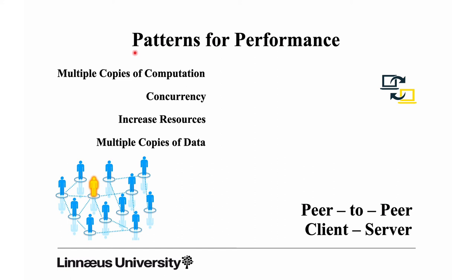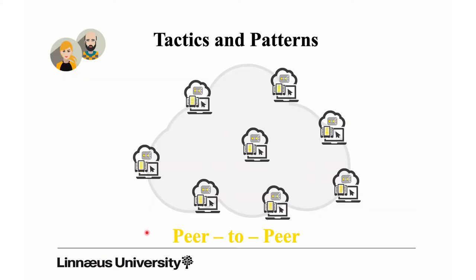Having multiple copies of data could create a problem of data consistency, which we won't explore further here. In principle, tactics need to be supported by some kind of structure for how to organize the architecture elements. Looking at patterns for performance, client-server is one alternative, but you could also imagine a peer-to-peer solution — where a number of peers with similar responsibilities share computation, and you can achieve multiple copies of computation, concurrency, increased resources, and multiple copies of data using peer-to-peer.